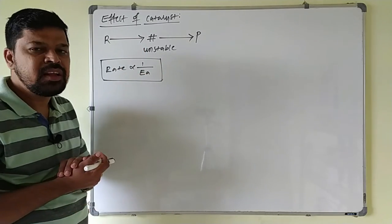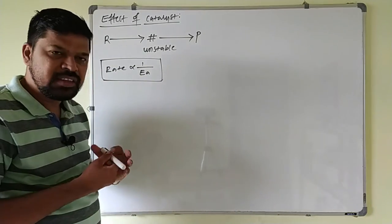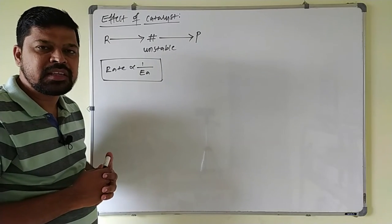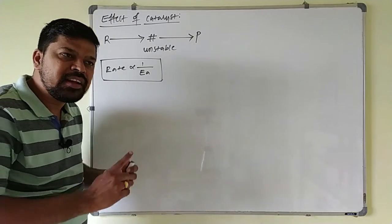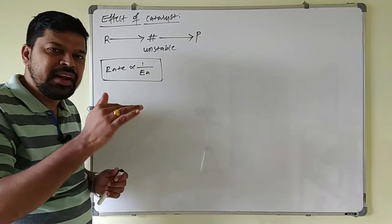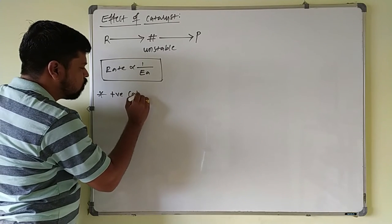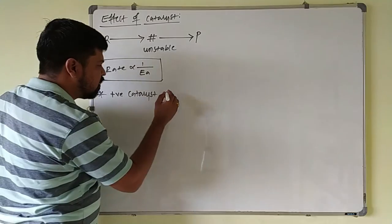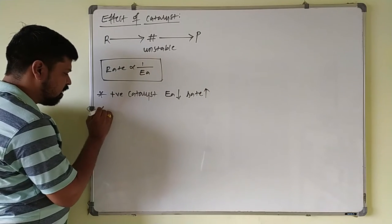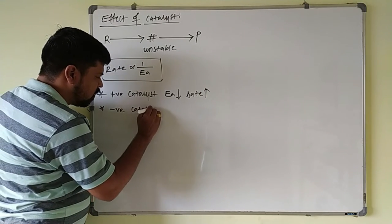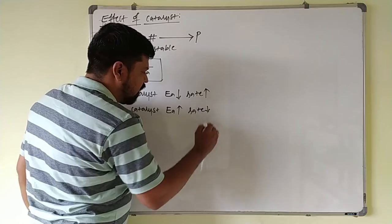This catalyst forms a temporary bond with the reactant to produce an unstable intermediate complex with a very short life, which then decomposes to give products. The catalyst provides an alternate pathway for the reaction by lowering the activation energy. A positive catalyst provides an alternate pathway, lowers activation energy, and increases the rate of reaction. A negative catalyst increases the activation energy and thereby decreases the rate of reaction — a negative catalyst is essentially a poison.